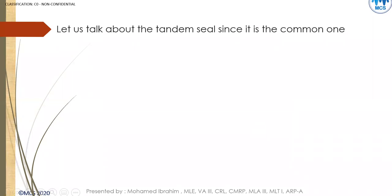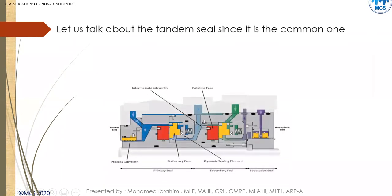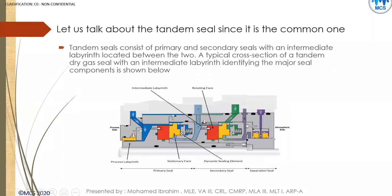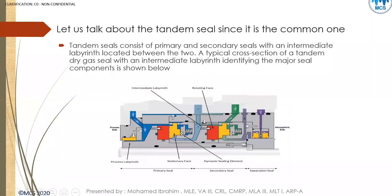The tandem seal is the most commonly found arrangement in compressors. It has the primary seal, the secondary seal, the separation seal, and an important part called the process labyrinth seal.